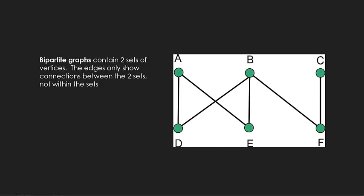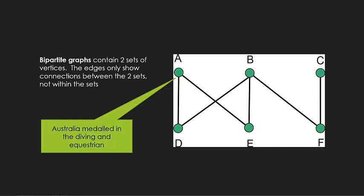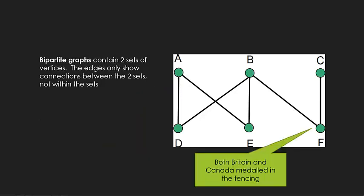Another style of graph is a bipartite graph. You'll see more of these in Chapter 24 when we start looking at applications. Basically, a bipartite graph shows two separate sets of data or information, and shows the connections between those two sets. We can see here we've got vertices A, B and C form one set of information, and vertices D, E and F form a second set. There's no actual connection between A, B and C, or D, E and F, but there are connections between the two sets. If we have a look at this in the context of three countries competing in the Olympics, so Australia, Britain and Canada, and three events, diving, equestrian and fencing. We can see here that Australia, by a connection to D and to E, have medaled in the diving and the equestrian. And by the same token, both Britain and Canada have medaled in the fencing. So that's one application of these bipartite graphs.